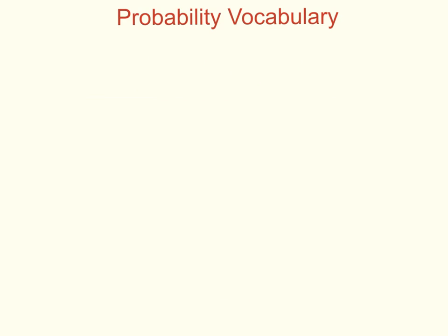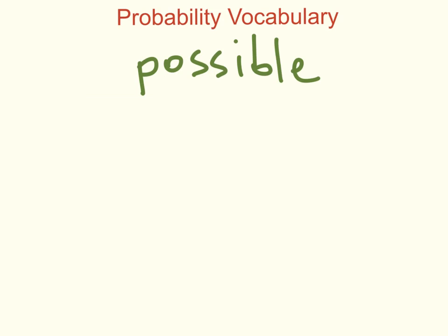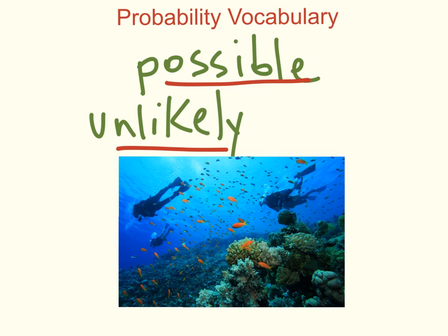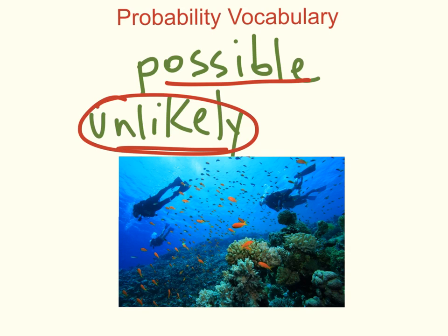The next word I want you to know is the word possible. Possible means it could happen — it might happen, it might not happen, but there's a chance it might. Sometimes we have possible but unlikely events. Those are events that could happen because they're possible, but unlikely means probably not. Mr. Seaman going scuba diving next summer is possible but unlikely — there's a chance, but because I don't like scuba diving, it probably won't happen.